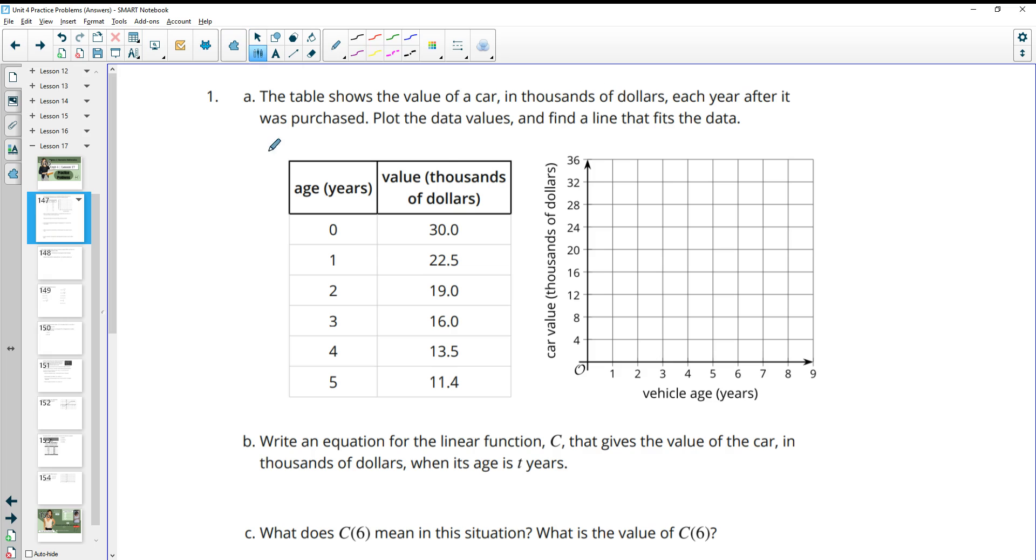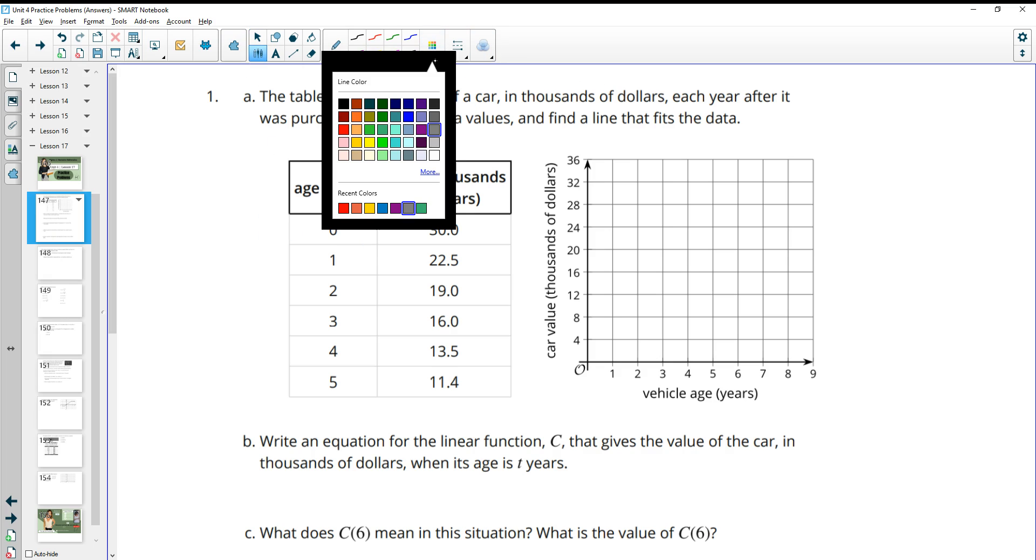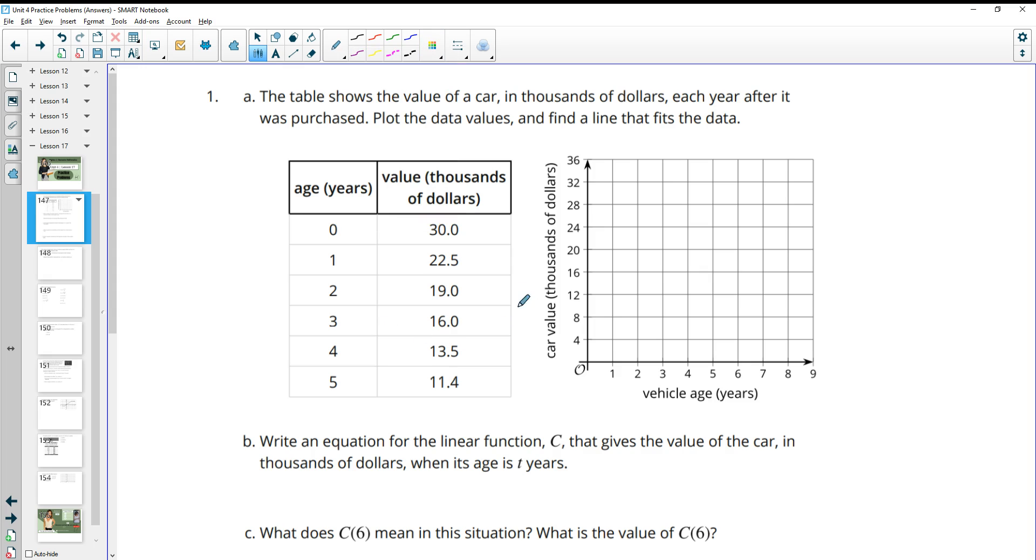So we're going to go ahead and just plot these points. We've got 0, 30, so about here. Then 1 and 22.5, so halfway would be 22, so a little over half.